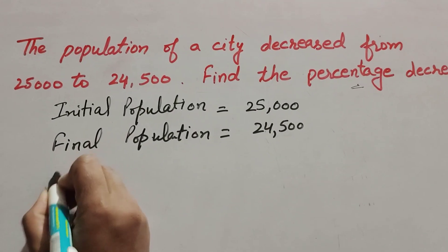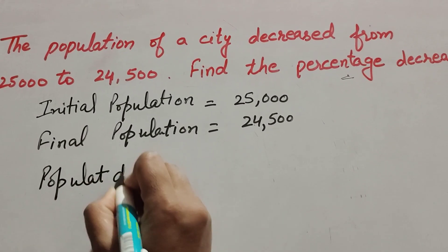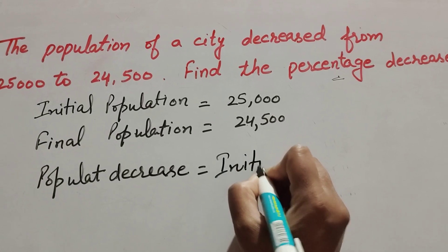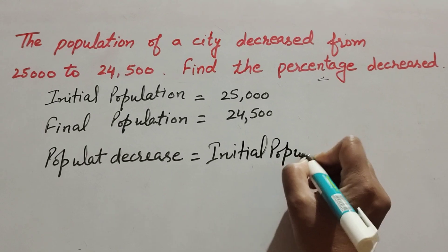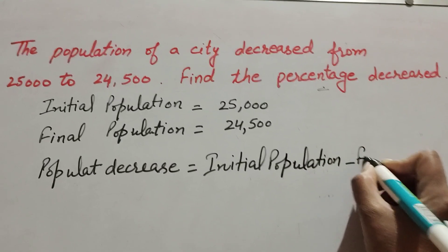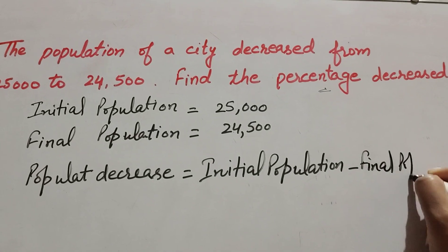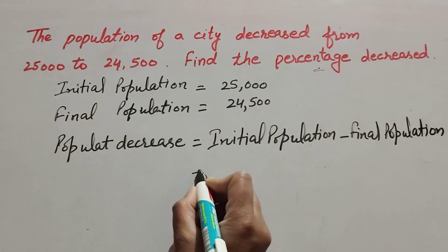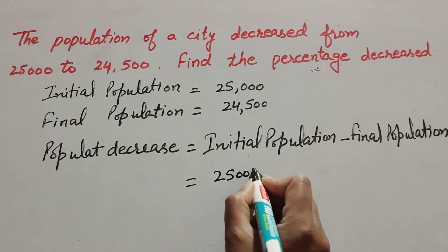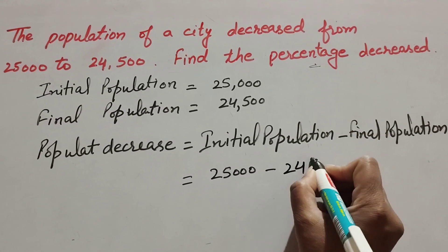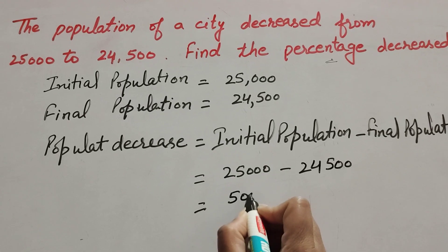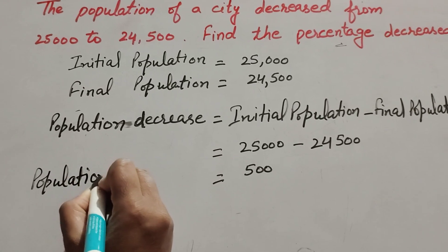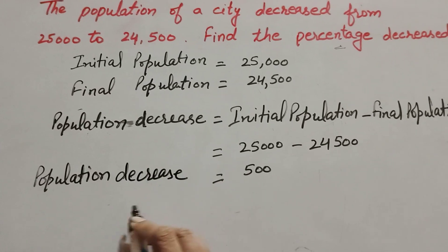First we find the population decrease. Population decreased is equal to initial population minus final population — that is 25,000 minus 24,500, which is equal to 500. So population decreased is equal to 500.